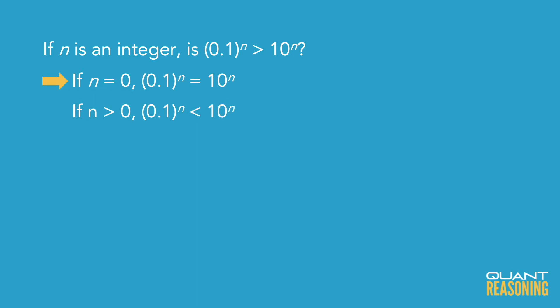And certainly, if n is positive, then for sure 10 times 10 times 10 is always going to be bigger than 1 tenth times 1 tenth times 1 tenth.